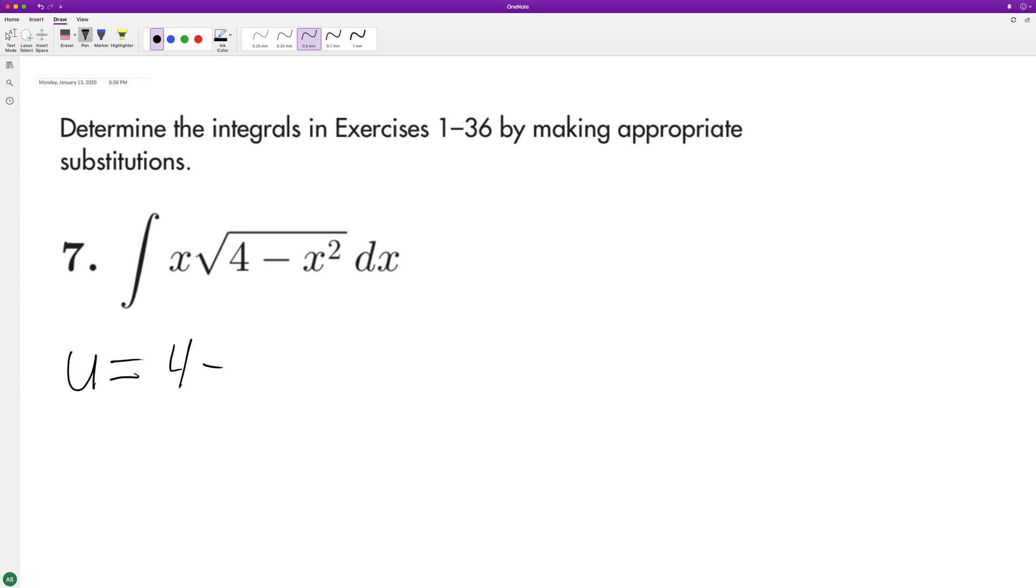We'll set u equal to 4 minus x squared and du is equal to negative 2x. So to get our du equal to our dx here, x dx, we need to multiply by negative 1 half. So negative 1 half du is equal to x dx.